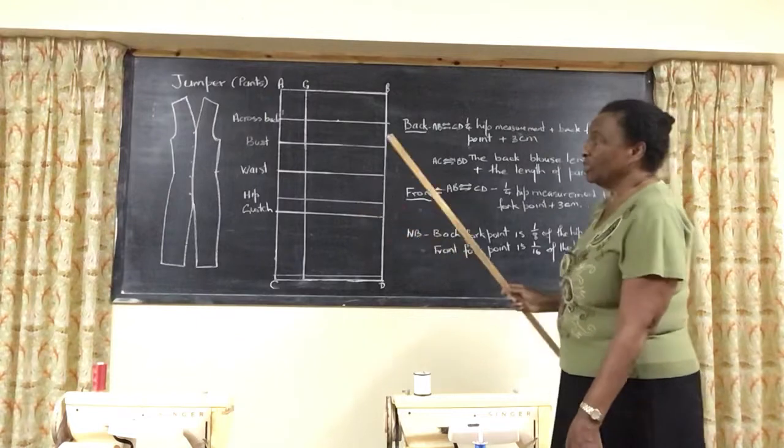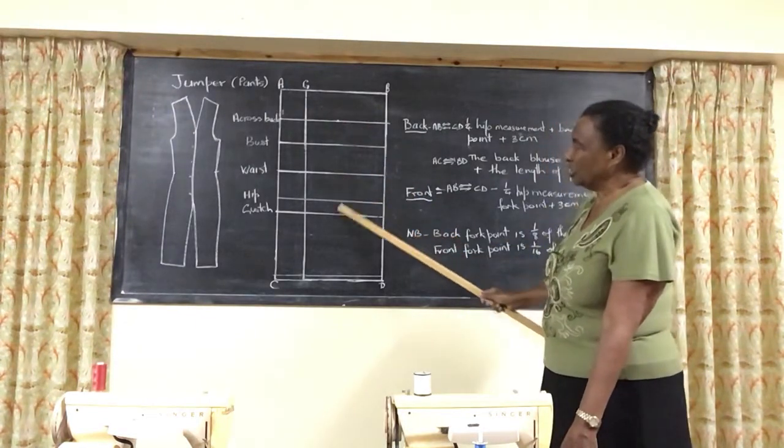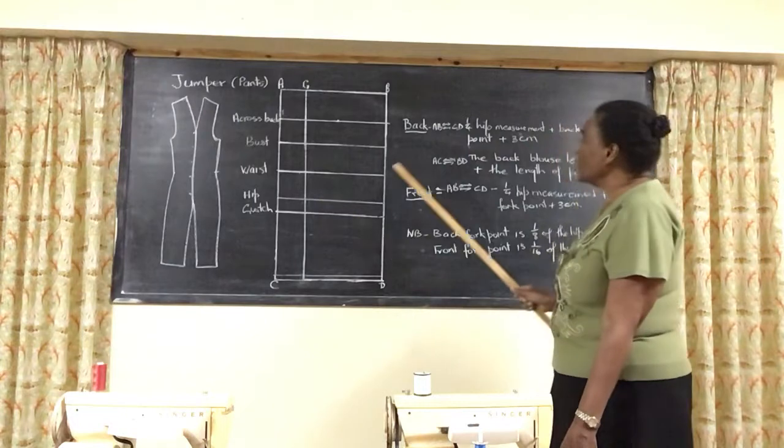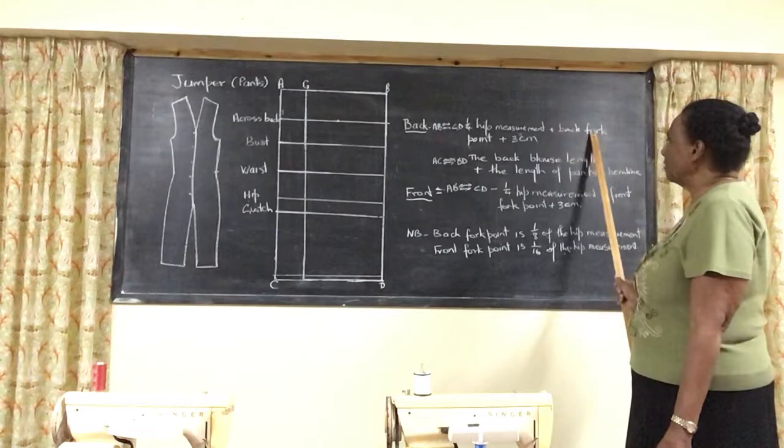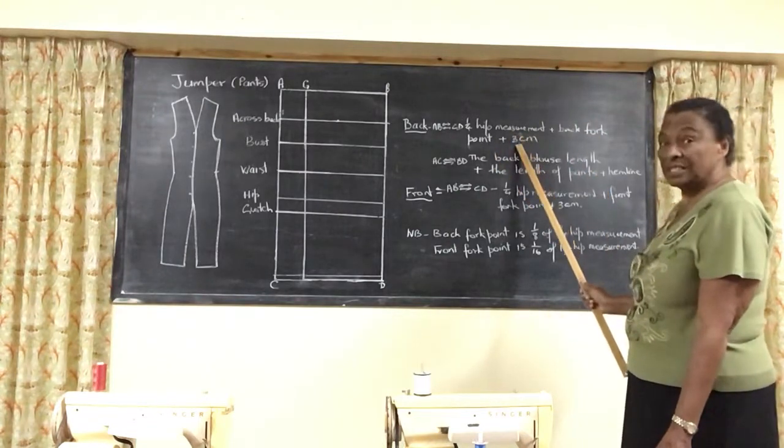Now what we are actually doing is the top of your blouse attached to your pants. So your A, B and C is going to be the quarter of the measurement plus the back fork point plus 3 centimeters.